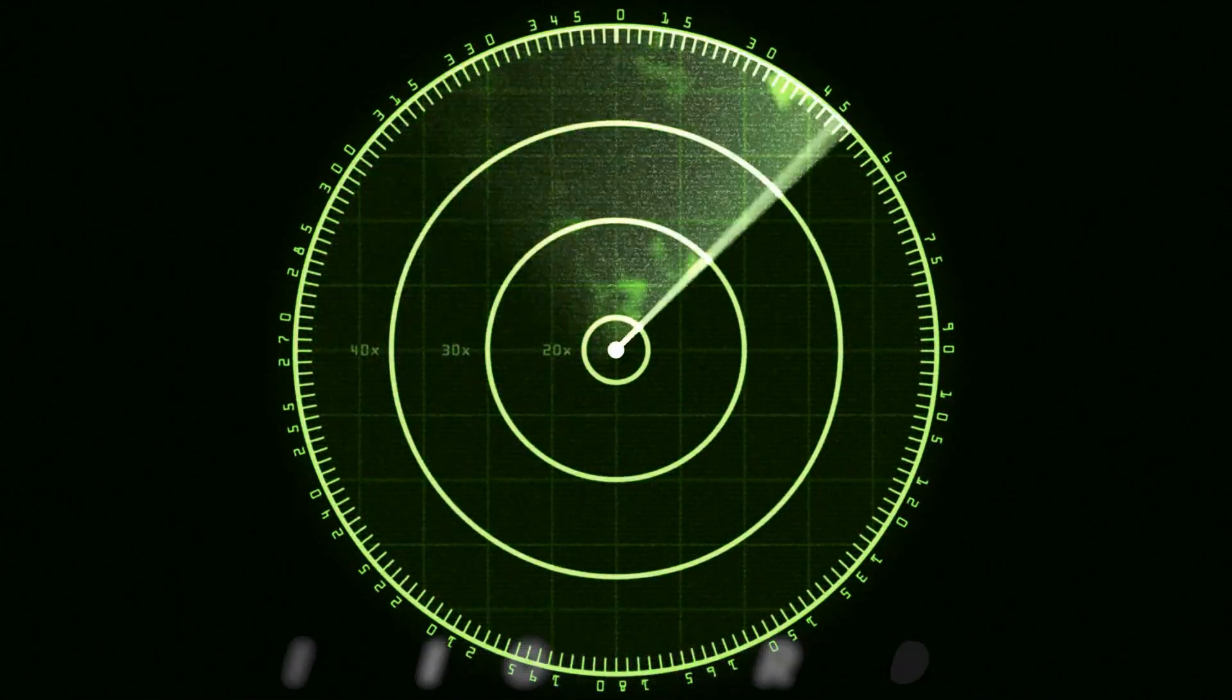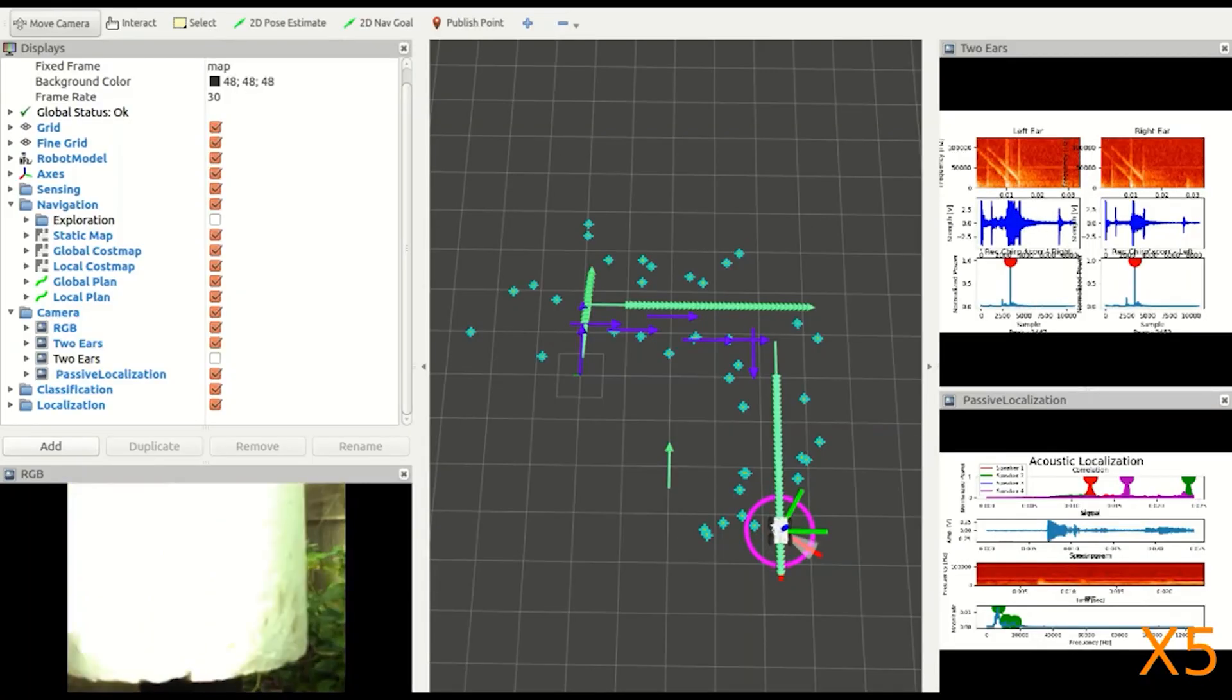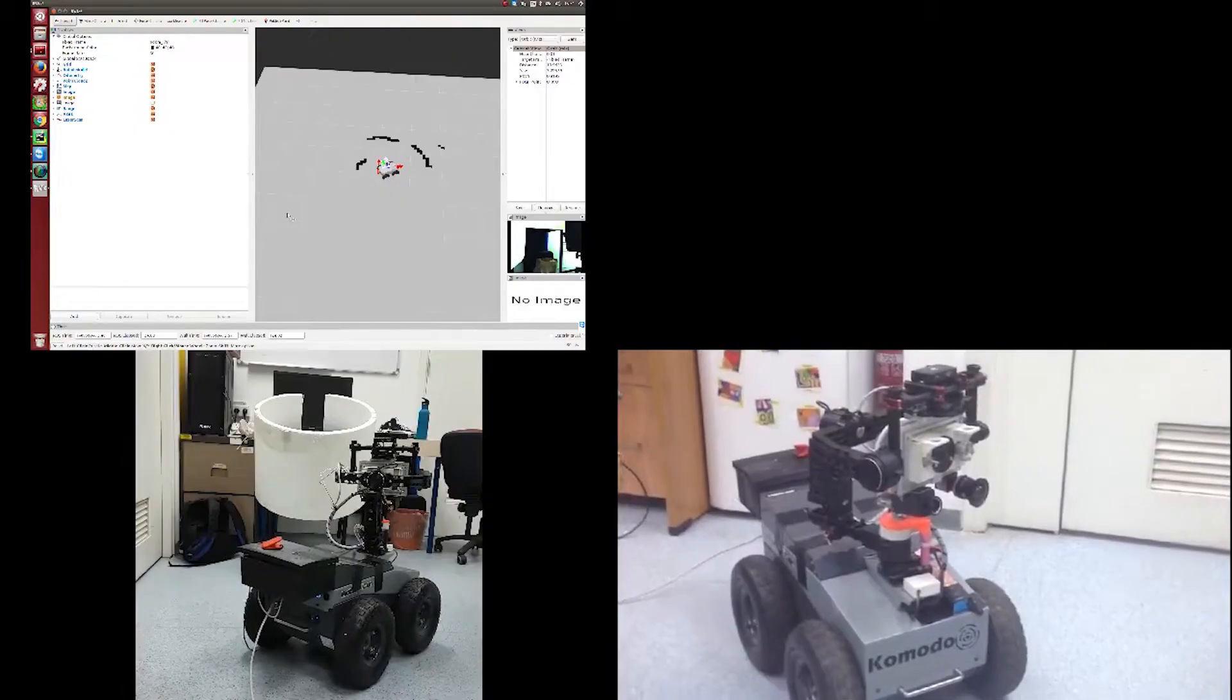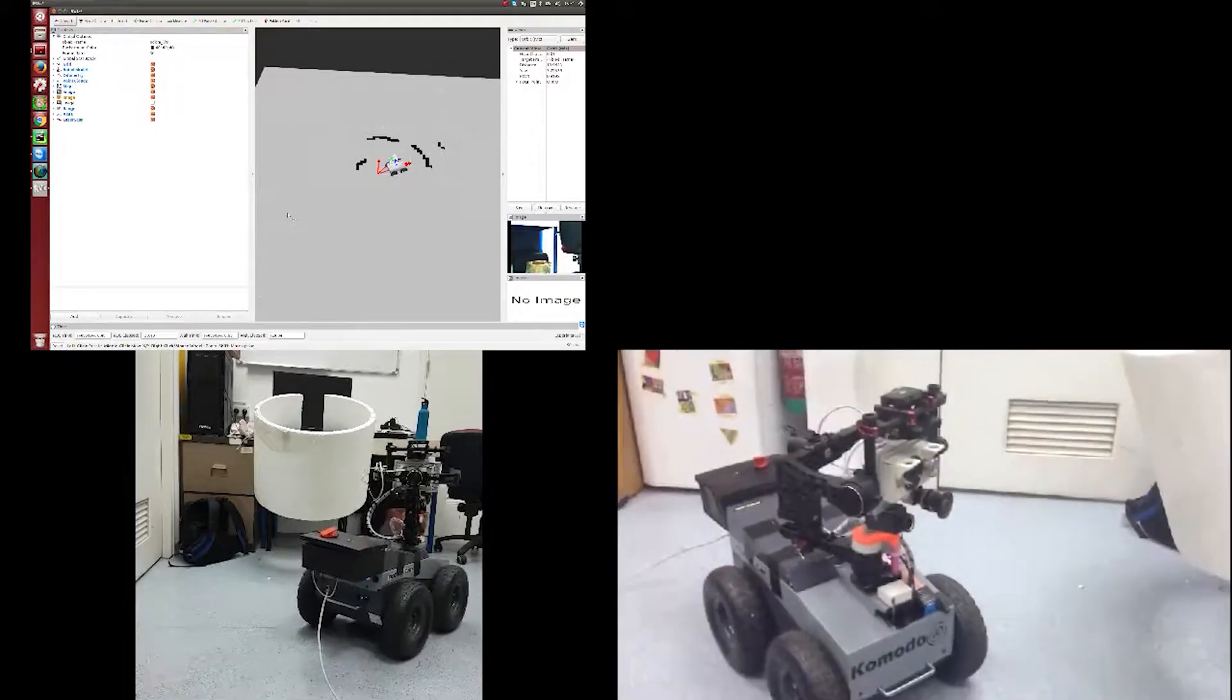This unique sense is called echolocation. It's worth mentioning that bats are not blind. Many bats use sight along with echolocation, although the way that they combine both senses is still unclear to us.